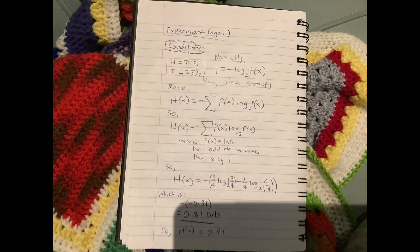And if you dump that into a calculator, you get 0.81 bits. So the entropy of this system is 0.81 bits. The entropy, given these conditions, is 0.81 bits.